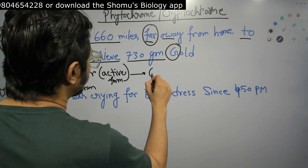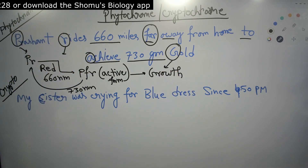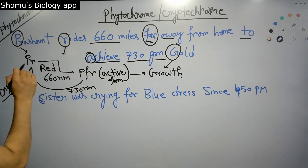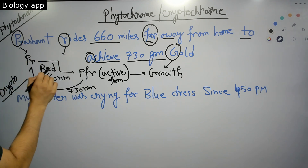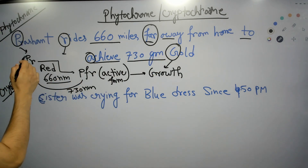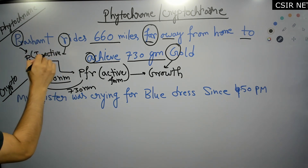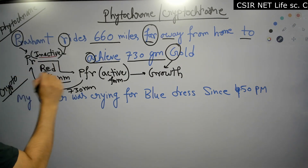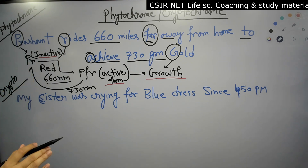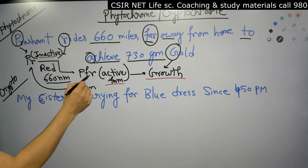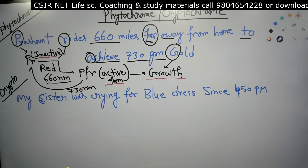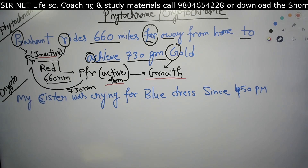Achieve 730 gram gold — 730 is the nanometer of wavelength. Then Pfr converts to Pr, and gold — G is for growth. So Pfr is the active form and helps in the growth of the plant, while Pr helps in inhibition of growth. Pfr, being far away from home, receives 730 nanometers of light and gets converted back to Pr. That is the simple interconversion between Pfr and Pr that you always need to remember.